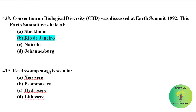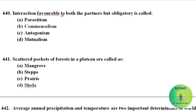Reed Swamp stage is seen in Hydrosere, where ecological succession starts with water. The interaction that is favourable to both partners but obligatory is called mutualism.